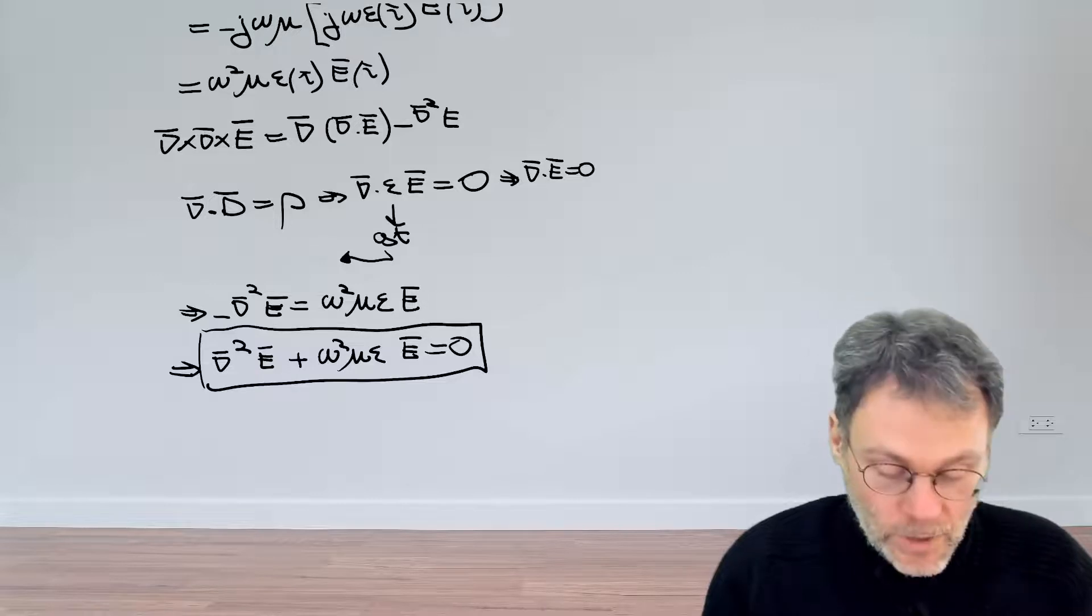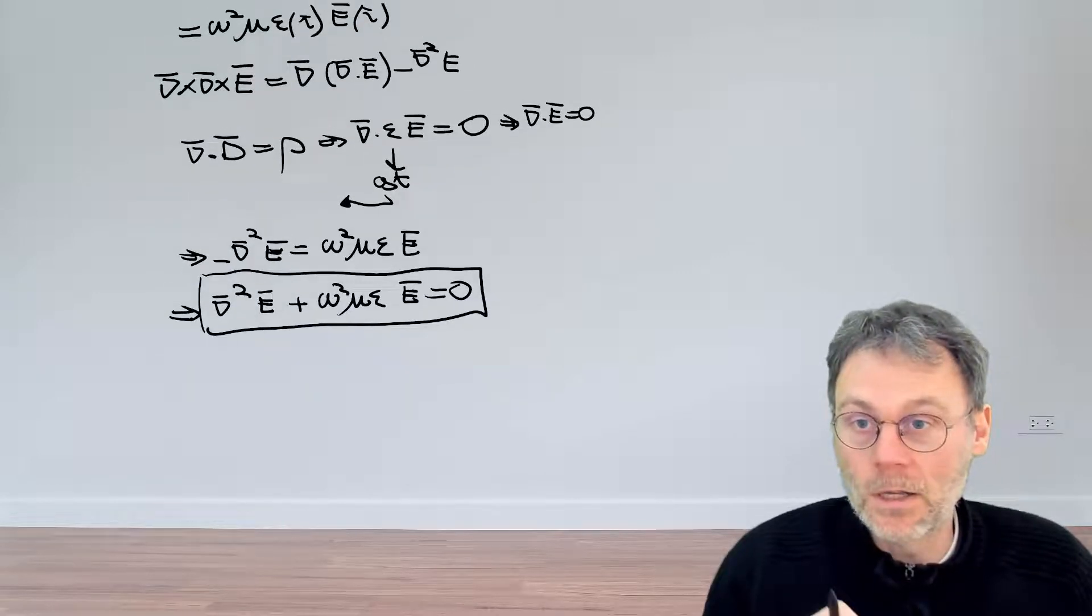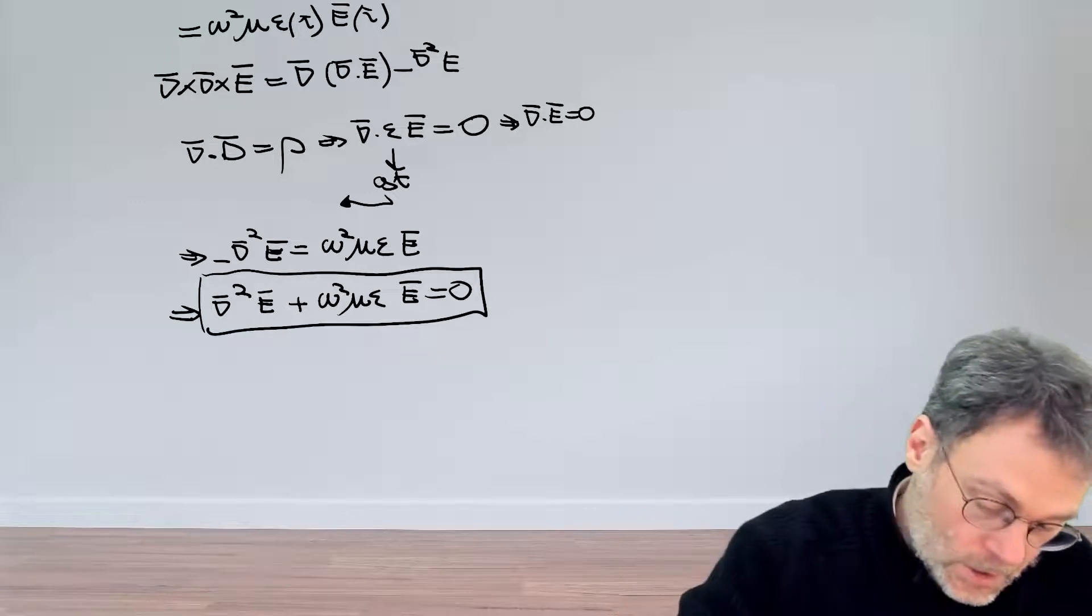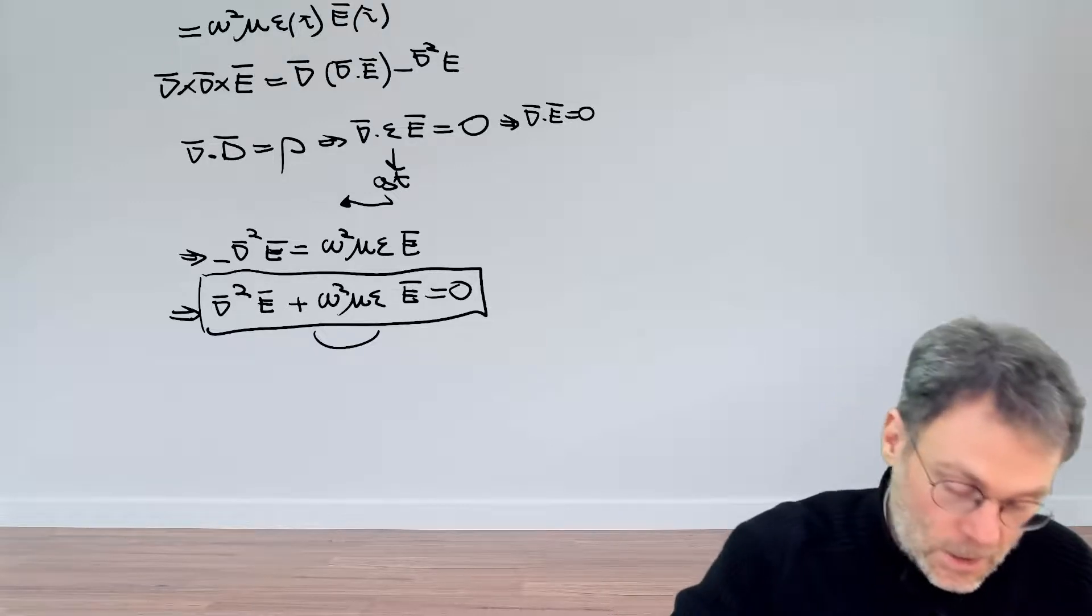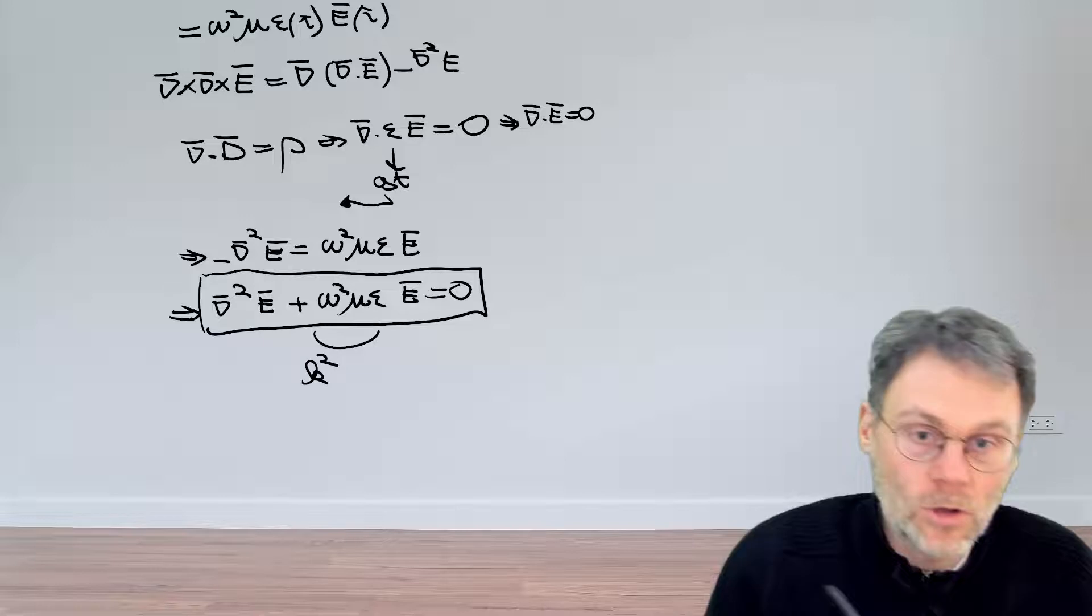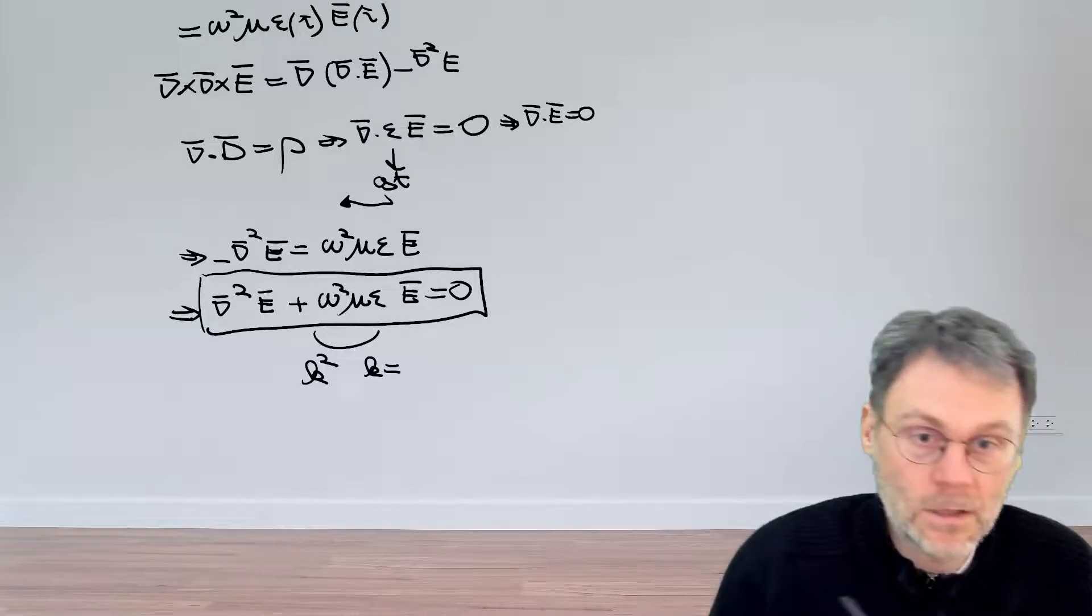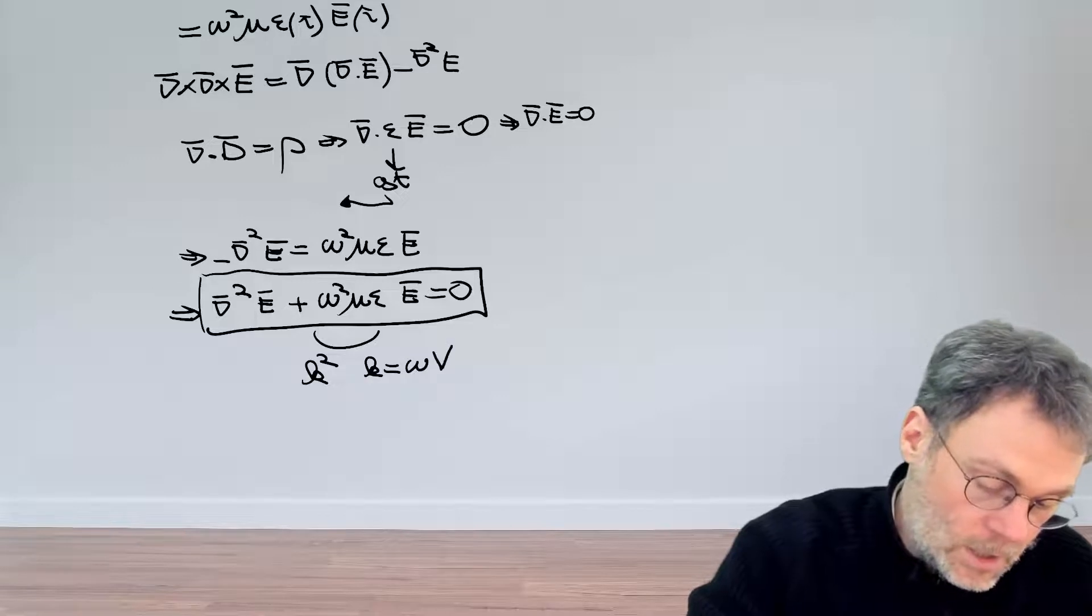People often write omega squared mu epsilon as k squared, propagation constant squared, where, by definition, k is then equal to omega square root of mu epsilon.